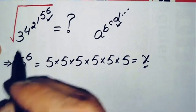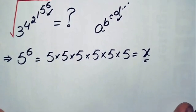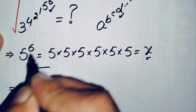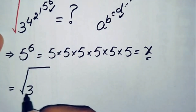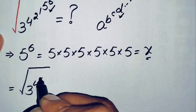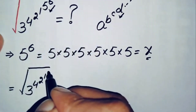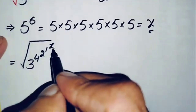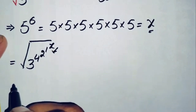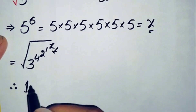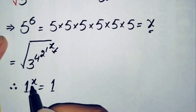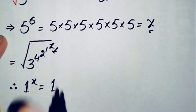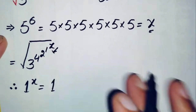Replacing 5 raised to power 6 with x, the expression becomes the square root of 3 raised to power 4, raised to power 2, raised to power 1, raised to power x. Now we apply the rule that 1 raised to power x always equals 1 for any number x, no matter how large.